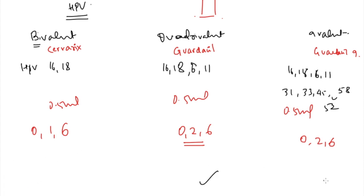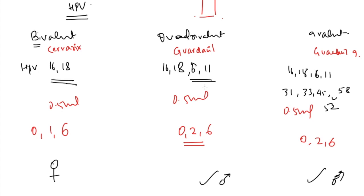The quadrivalent and nine-valent vaccines can also be given to males, since HPV 6 and 11 cause genital warts in males. The bivalent is only for females since it protects against Ca cervix only. The vaccine should be given at around 12 years of age; there is no point giving it after a female's first intercourse as she may already have been exposed to HPV.